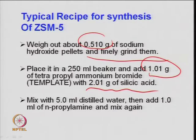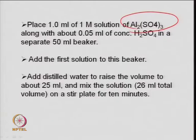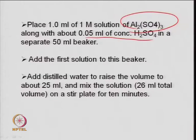Add 1 ml of normal propyl amine and mix again. These are the kind of materials generally required to provide the zeolite structure or primary group to form a gel. Add 1 ml solution of aluminum sulfate as another batch in the form of an alumina source, then mix them. The solution of aluminum silicate depends on the requirement of the silicon-to-aluminum ratio in the zeolite framework - one can calculate from initial calculations how much silicon and aluminum is required. Then add 0.05 ml of concentrated sulfuric acid in a separate 50 ml beaker.